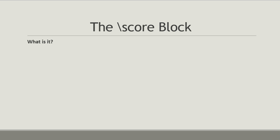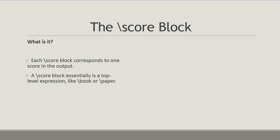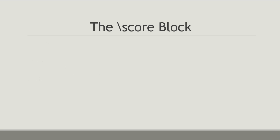Each score block corresponds to one score in the output. A score block is considered to be a top-level expression, like the paper block. Think of the score block as being whatever you want to appear on the page as far as how you want to represent your score. Most of the time you'll want to keep your variables — which can also be thought of as definitions — separate from your score. Technically it's not required, but it will save you a lot of grief and frustration later when you need to edit your file, debug something, or create parts for performers.